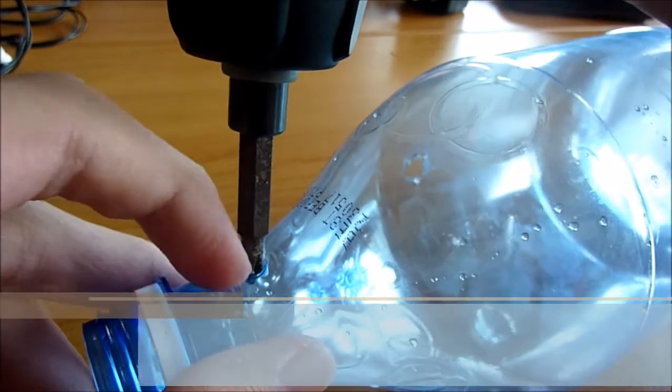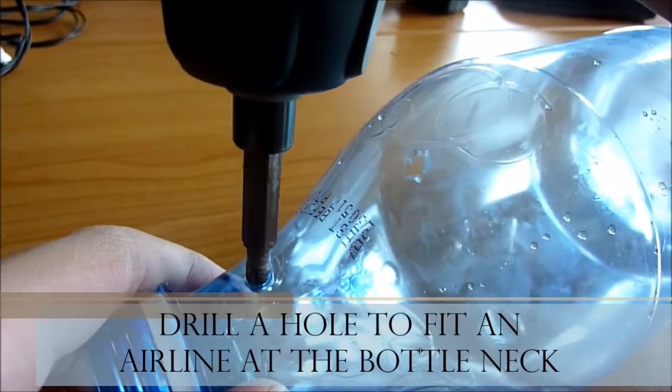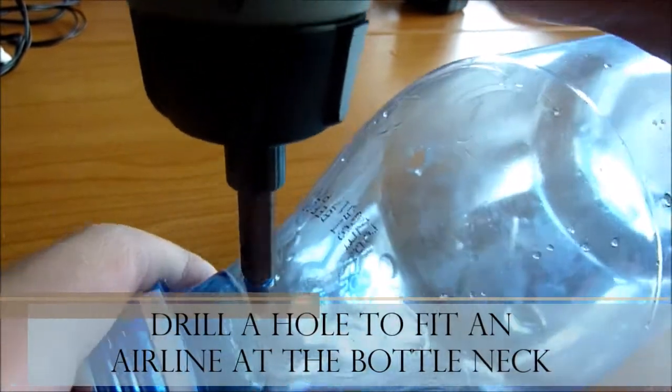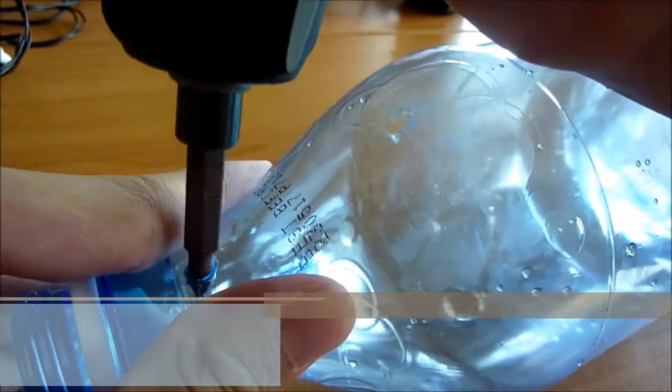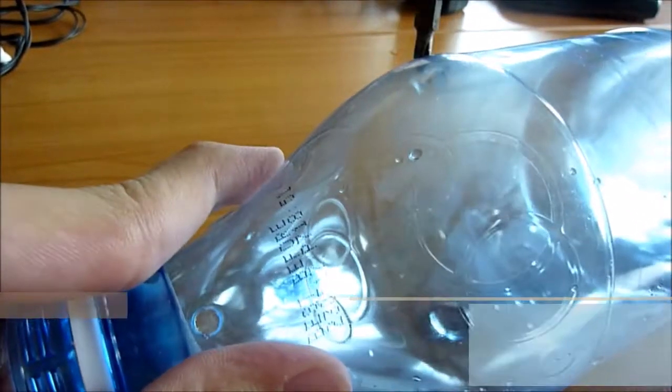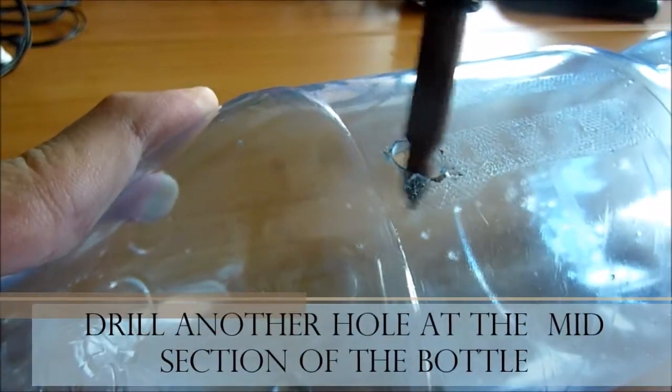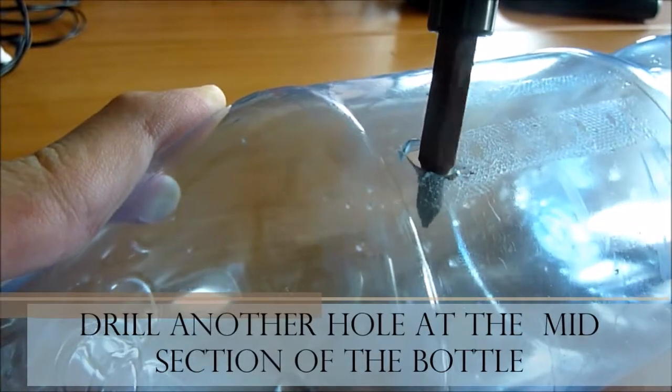Next, drill a hole at the neck of the bottle and this is where your airline will go through. Drill another hole at this area and widen it out a bit so you can fit the suction cup into it.